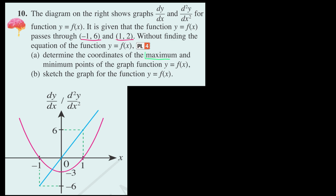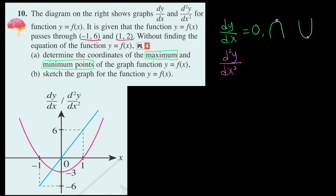Before we proceed, let's understand what minimum and maximum points mean. In order to find the turning point, we must find where dy over dx equals 0. To determine whether it is a maximum or minimum, we prove the concavity using d²y over dx². When d²y over dx² is less than 0 (negative), we have a maximum. When d²y over dx² is positive, meaning concave upward, we have a minimum.